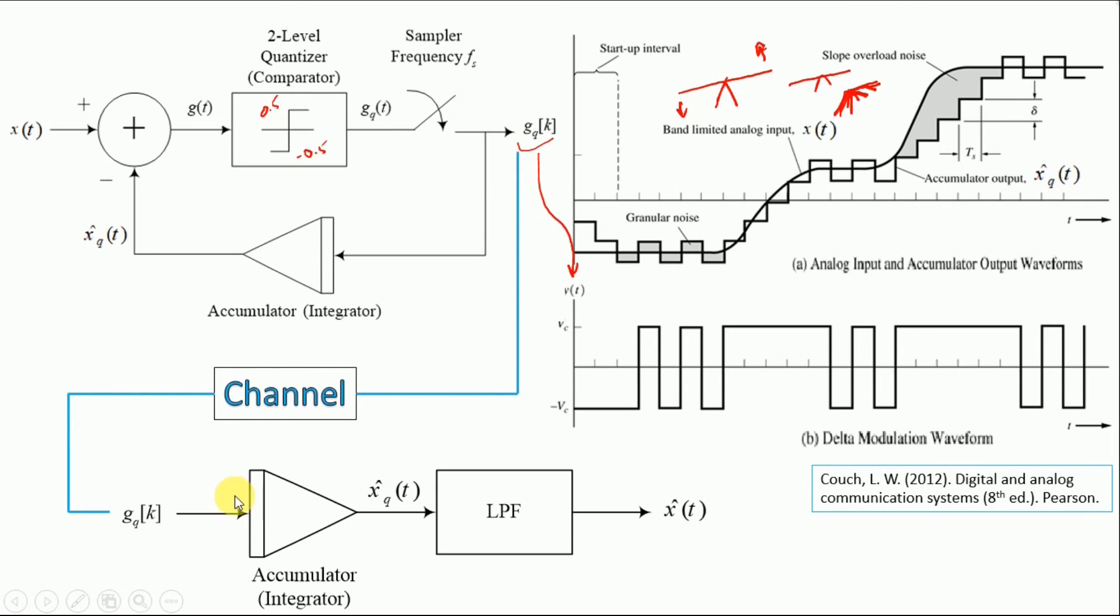Now moving on, say this is passed through a channel, and then we have a receiver. The receiver for Delta modulator is quite easy. So we will take this signal which is Delta modulation waveform and we would use the same accumulator over here at the receiver side.